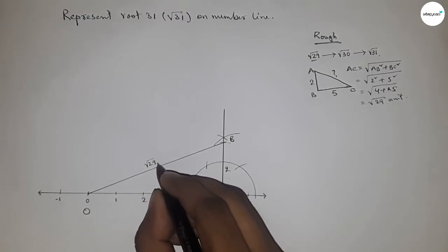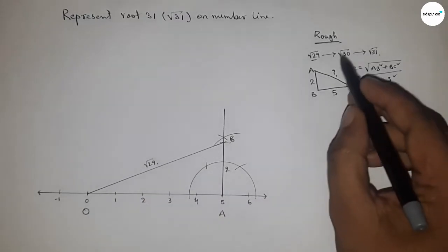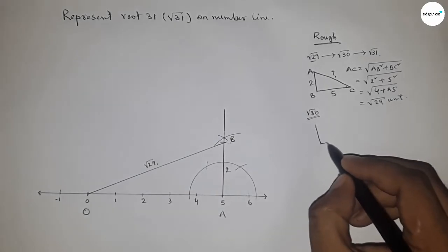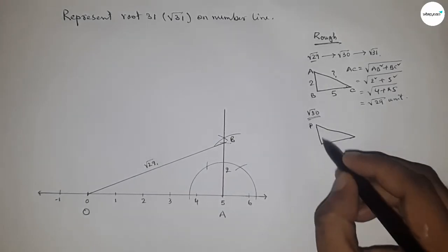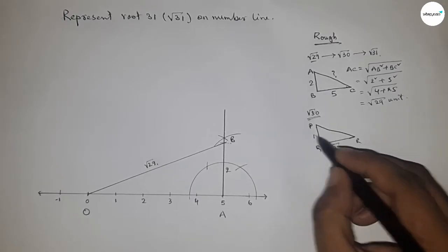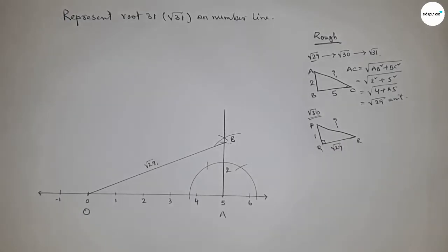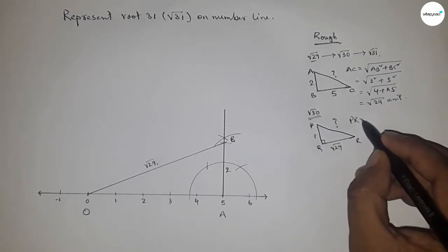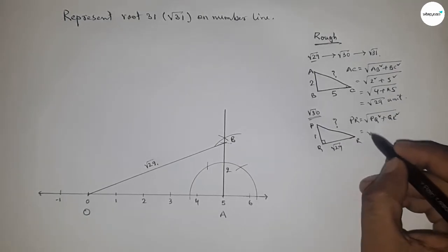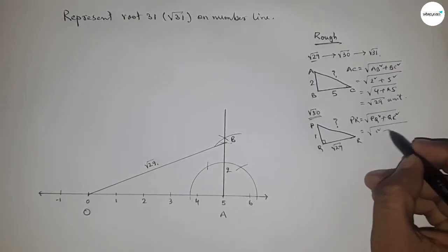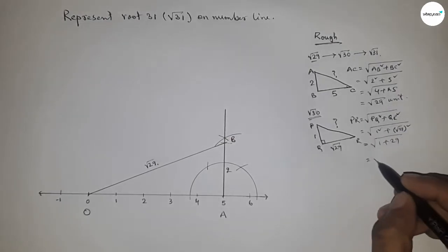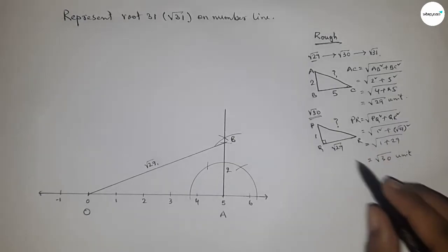Next we represent root 30. If there is a right-angle triangle PQR with base root 29 and height 1, then by Pythagoras theorem, hypotenuse equals root over (1² + (√29)²) = root(1 + 29) = root 30 units.